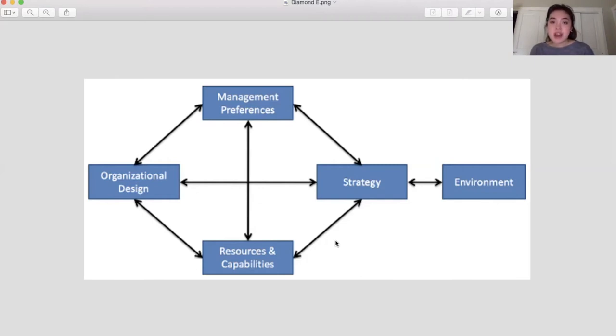We can see that out of the five components of the Diamond E Framework, strategy is the critical linkage variable. Strategy tells you which opportunities the business should pursue in the environment and accordingly the organizational resources, design, and management preferences necessary for successful execution.